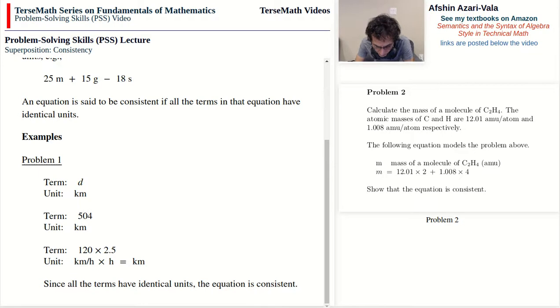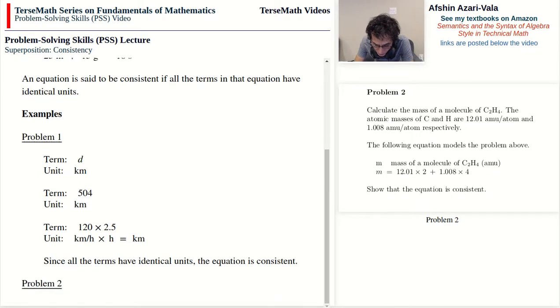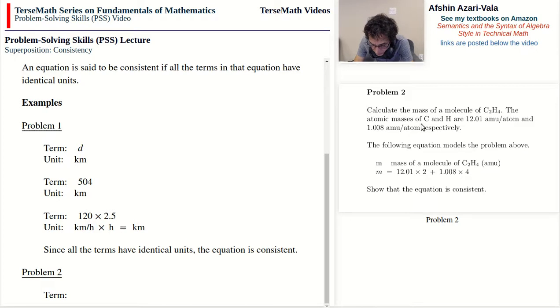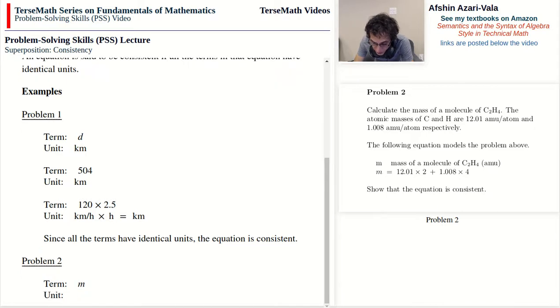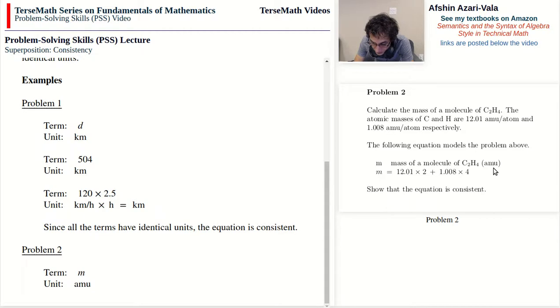Okay, so for problem number two, as before we're going to identify the terms and then find their units. There are three terms in this equation: M, 12.01 times 2, and 1.008 times 4. The first term is M and the unit for it is amu, as you can tell here. Implied by the body of the word problem, and also they have told us that M is the mass of a molecule of C2H4 in amu.